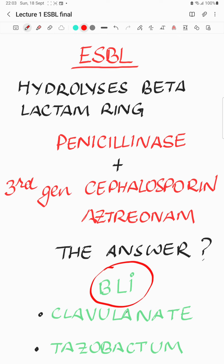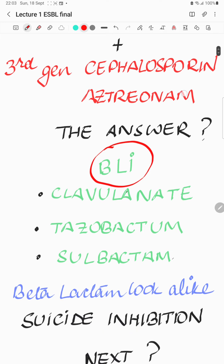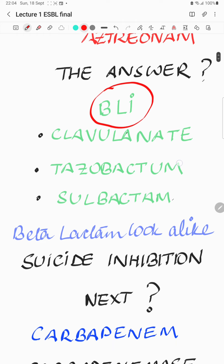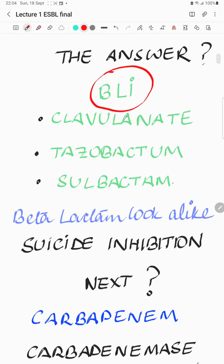To circumvent this problem, the answer was a beta-lactamase inhibitor. This is a beta-lactam-like structure — a look-alike. There is clavulanate, tazobactam, and sulbactam. What they do is bind the beta-lactamase, and in this process there is suicide inhibition. Once they bind with the beta-lactamase, they themselves get inactivated and inactivate the beta-lactamase as well.